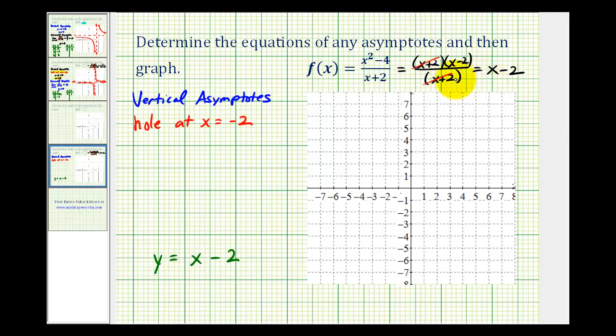So because this graph is a line except for the hole, there are no vertical asymptotes, and there are also no horizontal asymptotes. So we're going to go ahead and graph the line and then make a hole at x equals negative two.